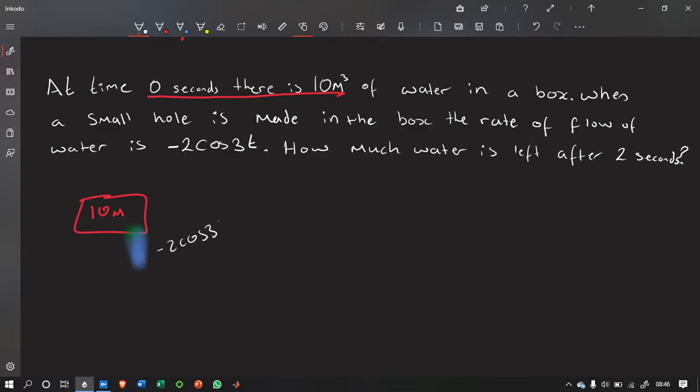At minus 2 cos 3t. So, if we were to write this as an equation, we'd say, the rate of flow, and we'll use v for this. Because it's volume. The rate of flow of water is equal to minus 2 cos 3t.